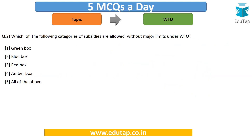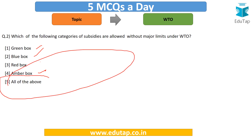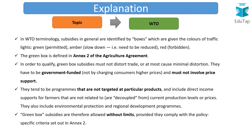The second question: which of the following categories of subsidies are allowed without major limits under WTO? Is it the green box, the blue box, the red box, the amber box, or maybe all of them? The correct answer is option number one — the green box. In WTO terminologies, subsidies are identified by boxes, and these boxes are mentioned in the Agreement on Agriculture, also known as AOA.